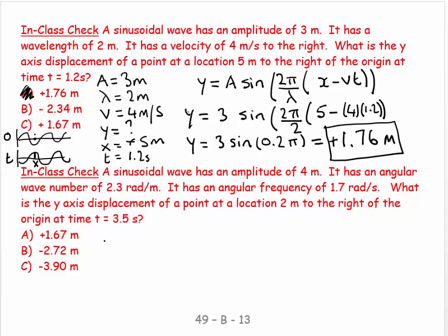A sinusoidal wave has an amplitude of 4 meters, so A in this case equals 4 meters. It has an angular wave number k equals 2.3 radians per meter. It has an angular frequency ω equals 1.7 radians per second. And what is the y axis displacement at a location x equals plus 2 meters, 2 meters to the right of the origin, and the time is now equal to 3.5 seconds.